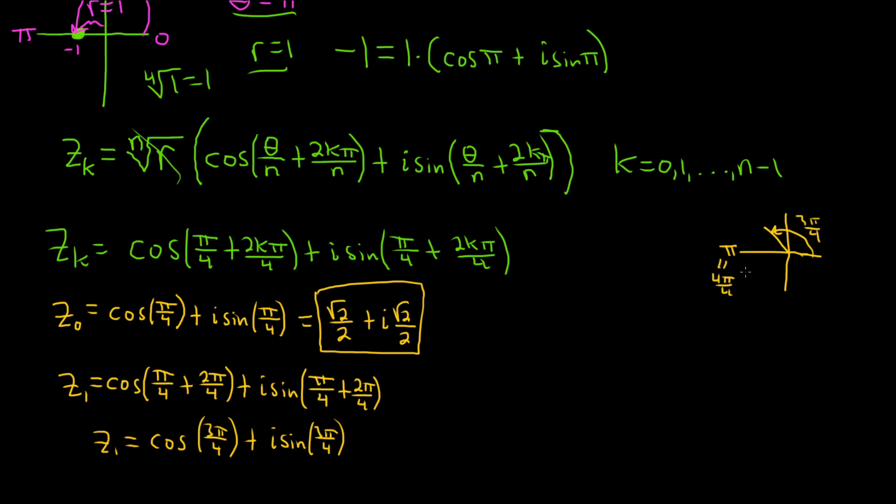And that means that the cosine is negative because it's in quadrant 2, so this will be negative root 2 over 2. And the sine is positive because it's the y-coordinate on the unit circle, so i square root of 2 over 2.